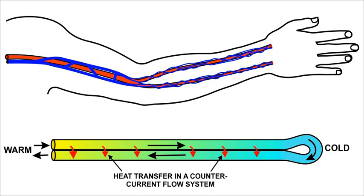Countercurrent multiplication is a similar but different concept where liquid moves in a loop followed by a long length of movement in opposite directions with an intermediate zone. The tube leading to the loop passively builds up a gradient of heat, cooling, or solvent concentration, while the returning tube has a constant small pumping action all along it, so that a gradual intensification of the heat or concentration is created towards the loop. Countercurrent multiplication has been found in the kidneys as well as in many other biological organs.